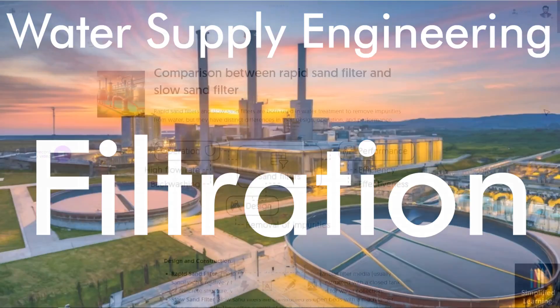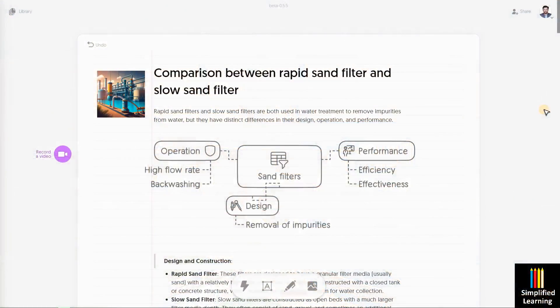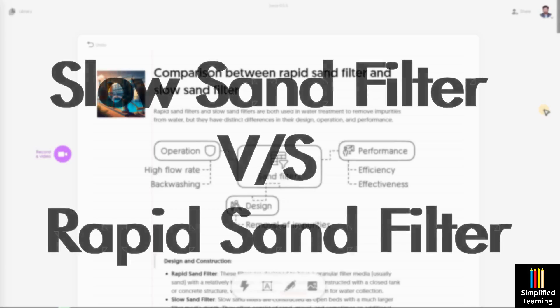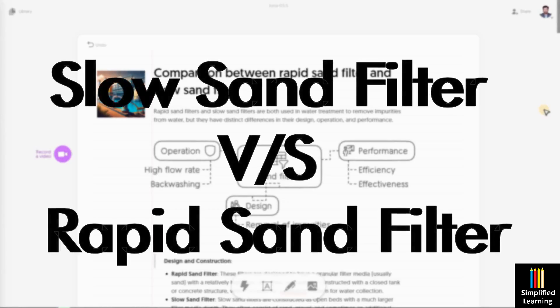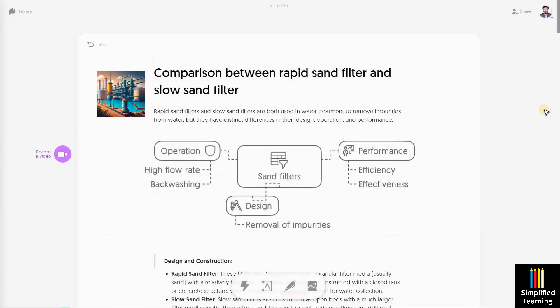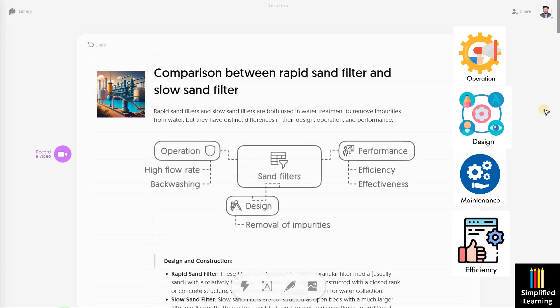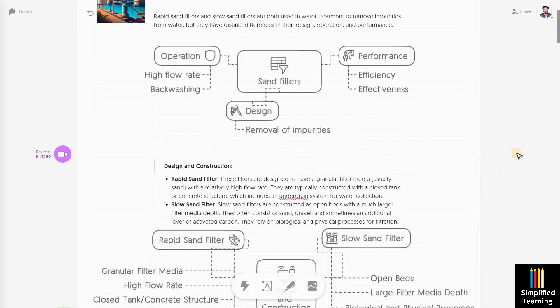In water treatment, we use rapid sand filter and slow sand filter. We will be discussing the comparative points between these two, based on operation, design, maintenance, performance, and efficiency — differentiating between the rapid sand filter (RSF) and the slow sand filter (SSF).